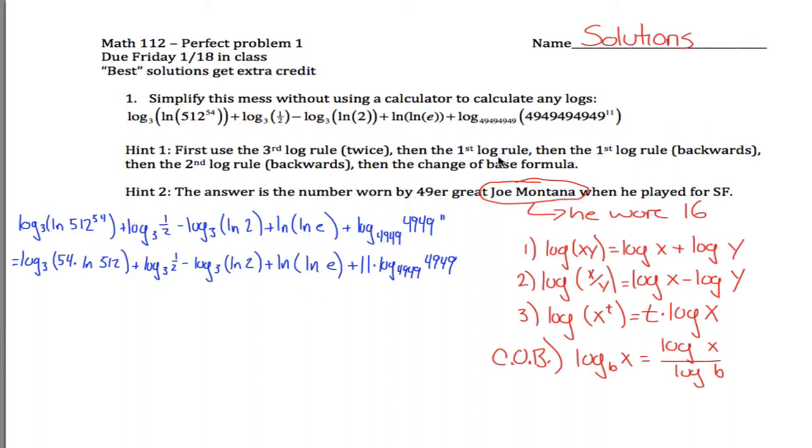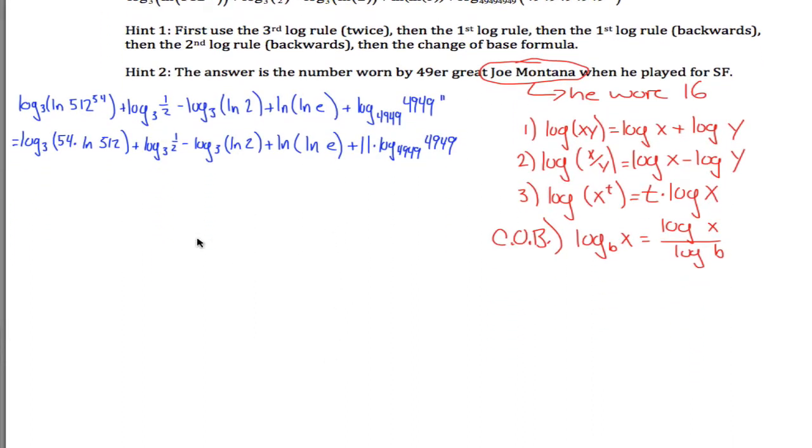Alright, then you use the first log rule. Here's my first log rule. It says that if you have the log of a product, you can break it into the sum of those two logs. The only product I have is in this first term. I'm taking the log base 3 of this product: 54 is one of the things and natural log of 512 is the other one. So I can write that as log base 3 of 54 plus log base 3 of the other thing that was getting multiplied together in there, natural log of 512.